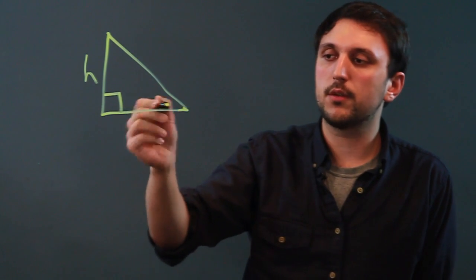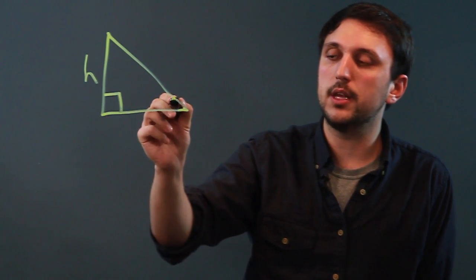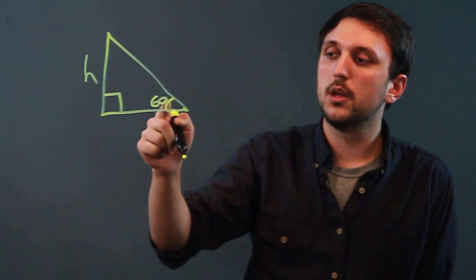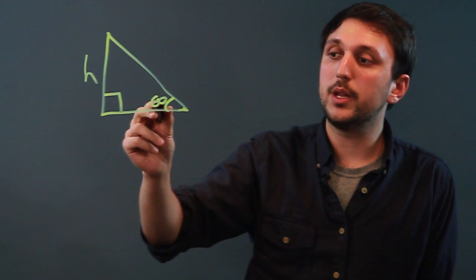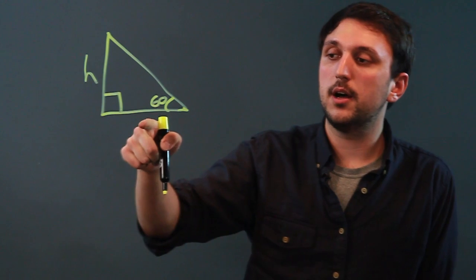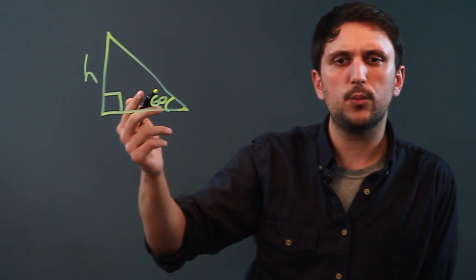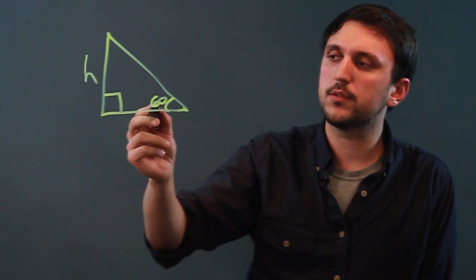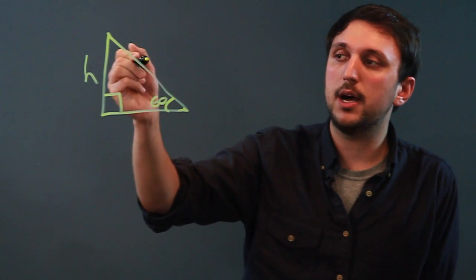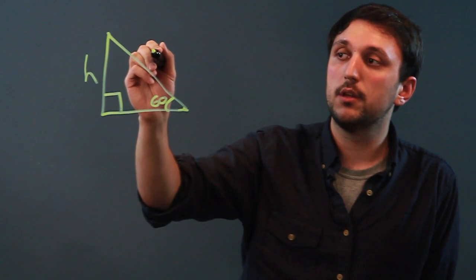First of all, let's give ourselves an angle. Let's say the angle is 60. So what we need to do is find the height and we have a length that we need to know. Let's say that the length is the hypotenuse and it is 5.